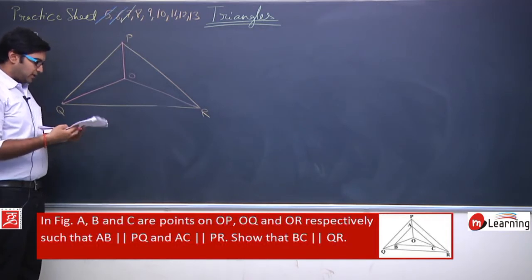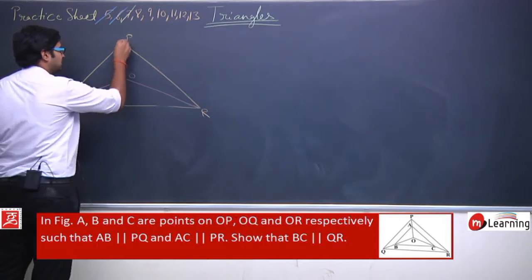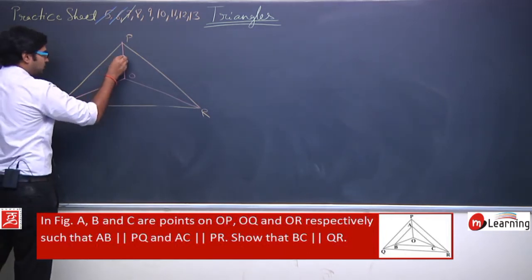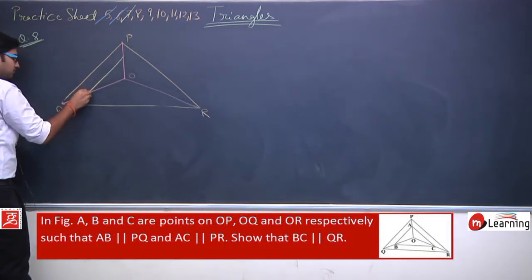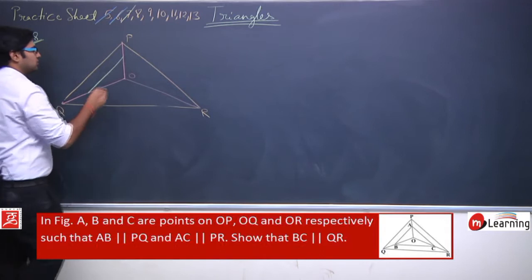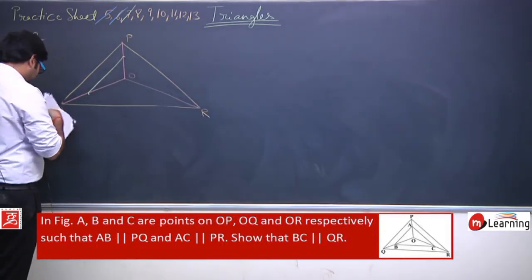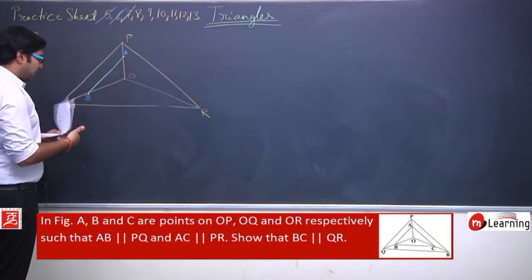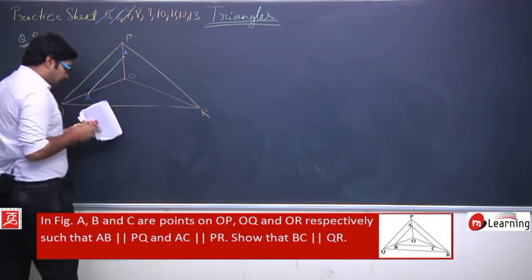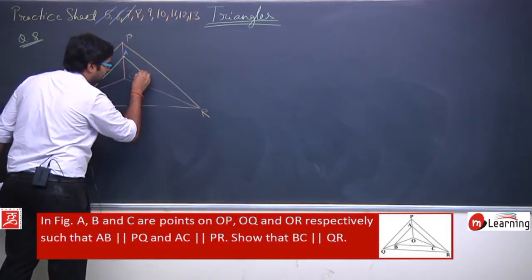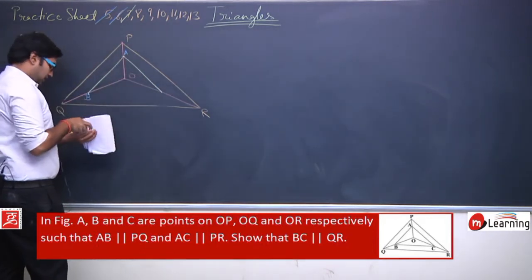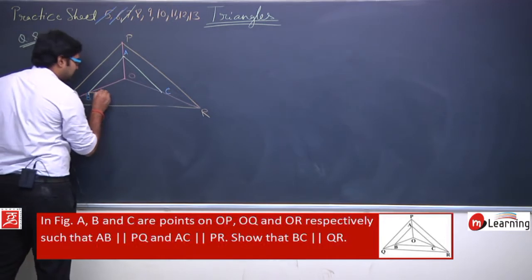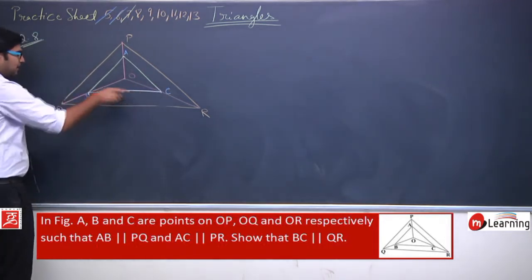Then A is a point on OP, and B is a point on OQ such that AB is parallel to PQ. So this is point A and this is point B. Similarly, AC is parallel to PR, and C is a point on OR such that AC is parallel to PR. This is point C.